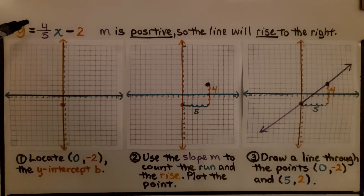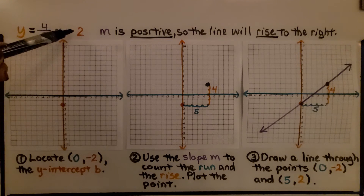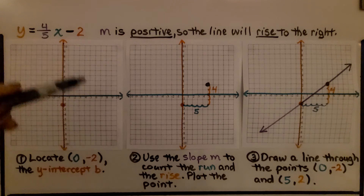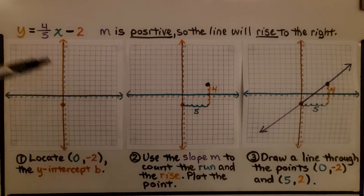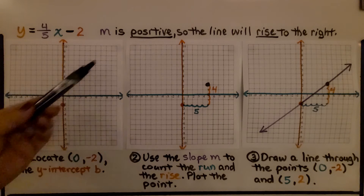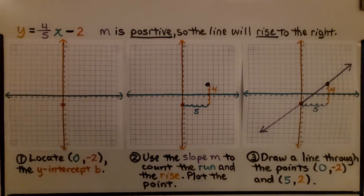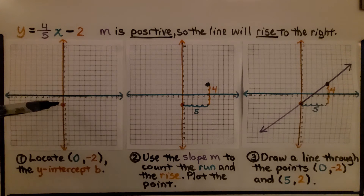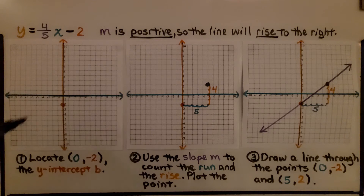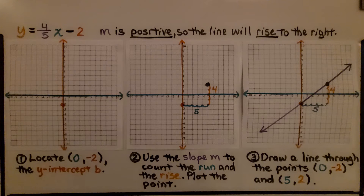Now for this equation, we do have a positive slope, but our y-intercept b is negative. Notice I now have a coordinate plane showing all four quadrants. Since the slope m is positive, we know the line is going to rise to the right. First thing we do is locate that negative 2 on the y-axis — it's going to be down here below the x-axis — and we put a point right there. Now we use the slope m to count the run and the rise and plot the point.